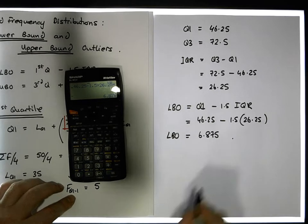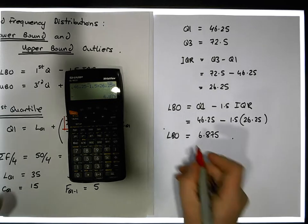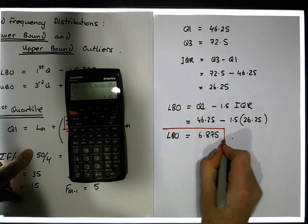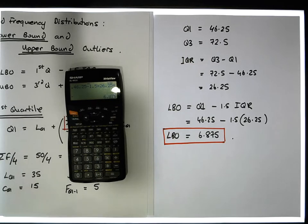So actually really what we're saying is that any value, let me get the red marker for this, that any observation that's less than 6.875 is classified to be unusually low.